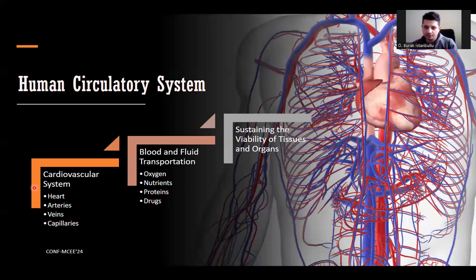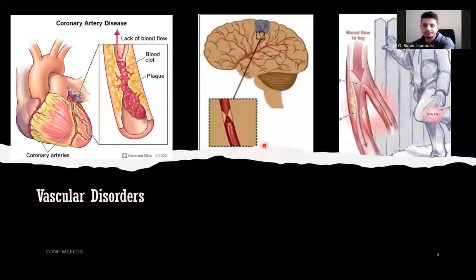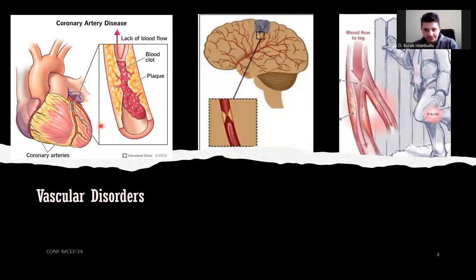The human circulatory system consists of the heart, arteries, veins, and capillaries, which transport blood and materials through the body, including oxygen, nutrients, proteins, and drugs. This leads to sustaining tissue and organ viability. However, vascular disorders may arise in the vessels. When a vascular pathway is blocked by a clot or plaque accumulation, it results in nutrient and oxygen deficiency of the tissues and organs. When it arises in heart vessels, coronary diseases occur. Brain vessel disorders result in stroke, and peripheral vessel occlusion may lead to severe pain or organ loss.